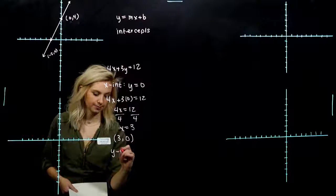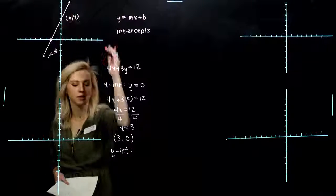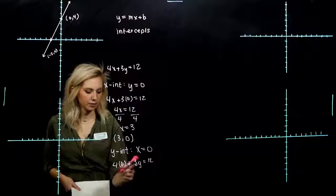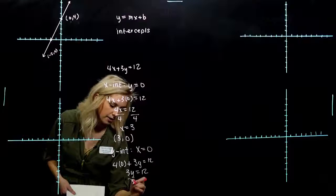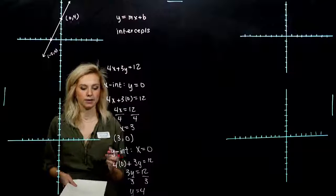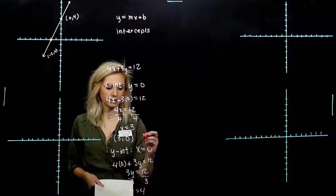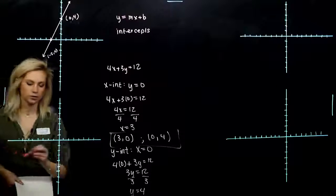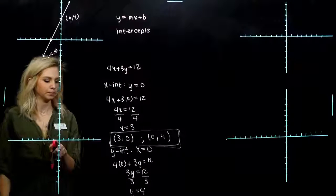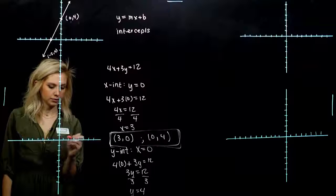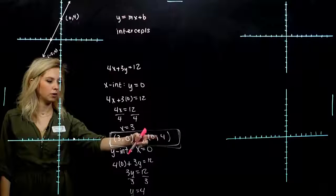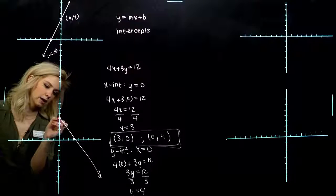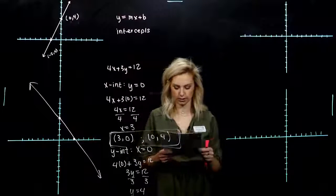Now to solve for the y-intercept: restrict x to 0, so the first term is gone. We're left with 3y equals 12, and dividing by 3 gives y equals 4. So the y-intercept is at (0, 4). These two points — (3, 0) and (0, 4) — are our intercepts, and we can use them to graph the equation. Plot (3, 0) and (0, 4) on the plane and draw the line with arrows, since it continues forever.